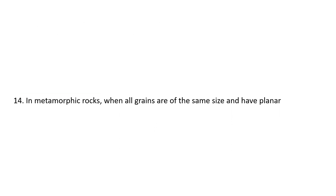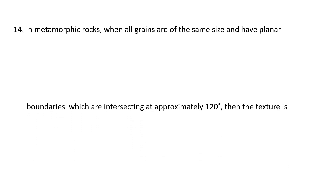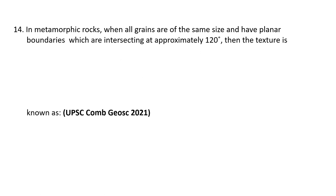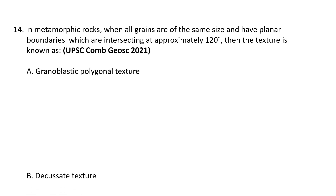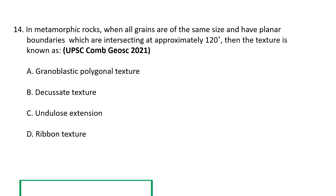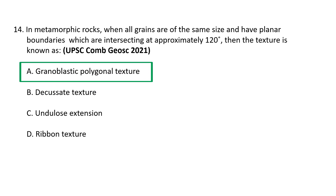Question 14: In metamorphic rocks, when all grains are of the same size and have planar boundaries intersecting at approximately 120 degrees, the texture is known as: (a) granoblastic polygonal texture, (b) decussate texture, (c) undullose extinction, or (d) ribbon texture. The correct option is A — granoblastic polygonal texture. This is an equigranular texture in which crystals adopt a polygonal morphology with grain triple junctions of approximately 120 degrees, forming to minimize the combined surface energy of phases within a rock.